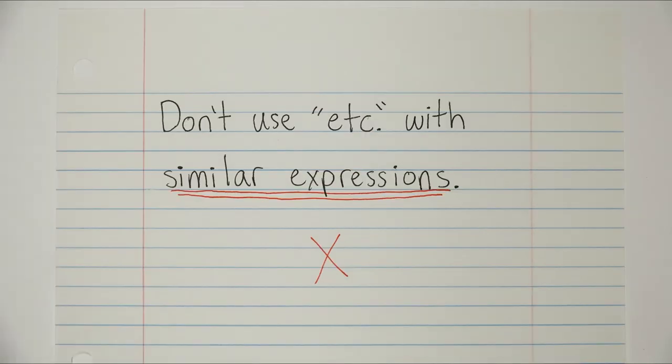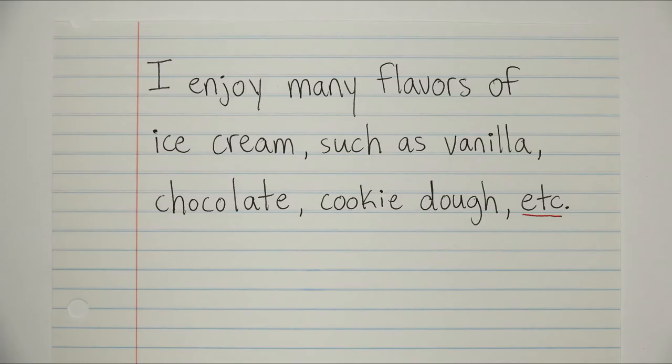The second no-no, so to speak, is that we don't want to use etc when we already have a similar expression in the sentence. Like such as or for example. Like this. I enjoy many flavors of ice cream, such as vanilla, chocolate, cookie dough, etc.